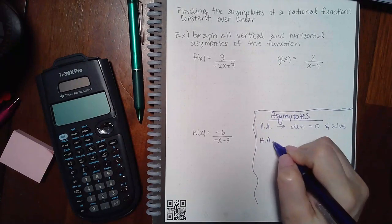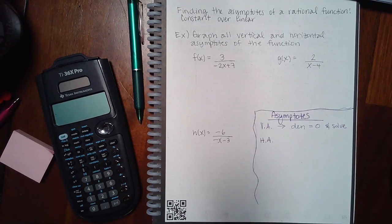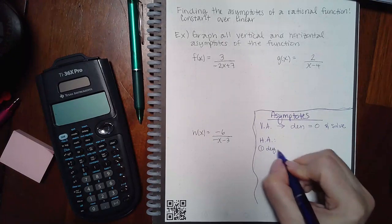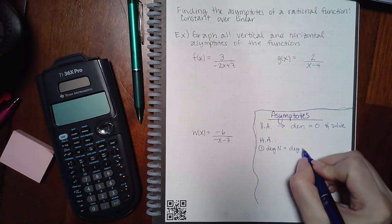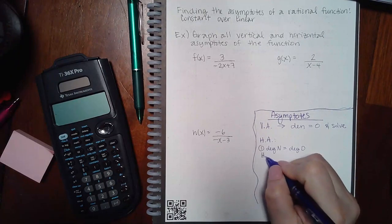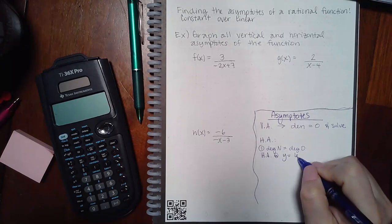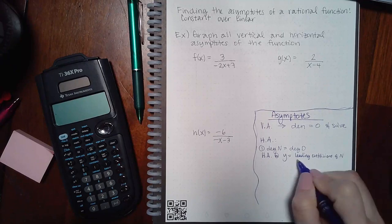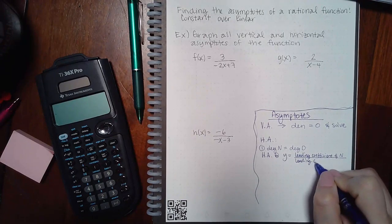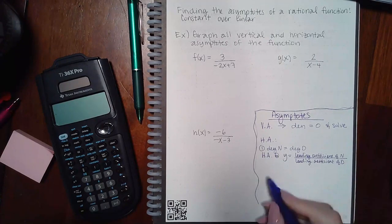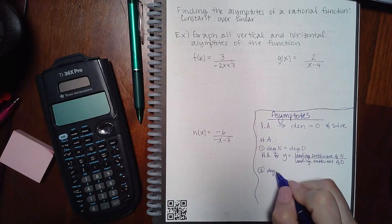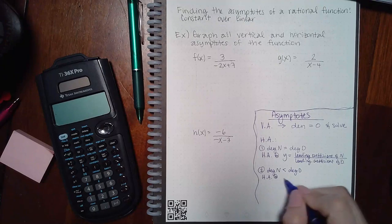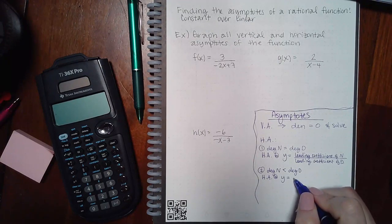For the horizontal asymptotes, those are a little different — you have to compare degrees, and you have one of three cases. If the degree of the numerator equals the degree of the denominator, then you have a horizontal asymptote at y equals the leading coefficient of the numerator over the leading coefficient of the denominator. The second case is if the degree of the numerator is less than the degree of the denominator — in that case, you have a horizontal asymptote at y equals zero automatically.